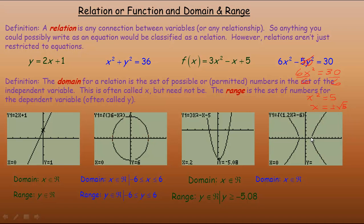So the domain is: x is less than or equal to negative root 5 on the left side, or greater than or equal to positive root 5 on the right side. The range is the entire set of real numbers — the graph goes forever upward and downward, so y can be any large positive or large negative number. There are no restrictions on what y could be.